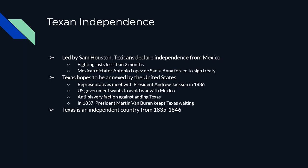Almost as soon as Texas declares its independence, its representatives meet with Andrew Jackson in 1836 — but that's Jackson's last year in office so he doesn't act. The U.S. government didn't want to go to war with Mexico, and the growing anti-slavery movement meant there was no real drive to annex Texas. Anti-slavery forces in the north were completely resistant, because annexing Texas would tip the balance of power toward slave states. So Texas ends up being an independent country from 1835 all the way until 1846 — which is one reason the Texas state flag can be flown at the same level as the U.S. flag.